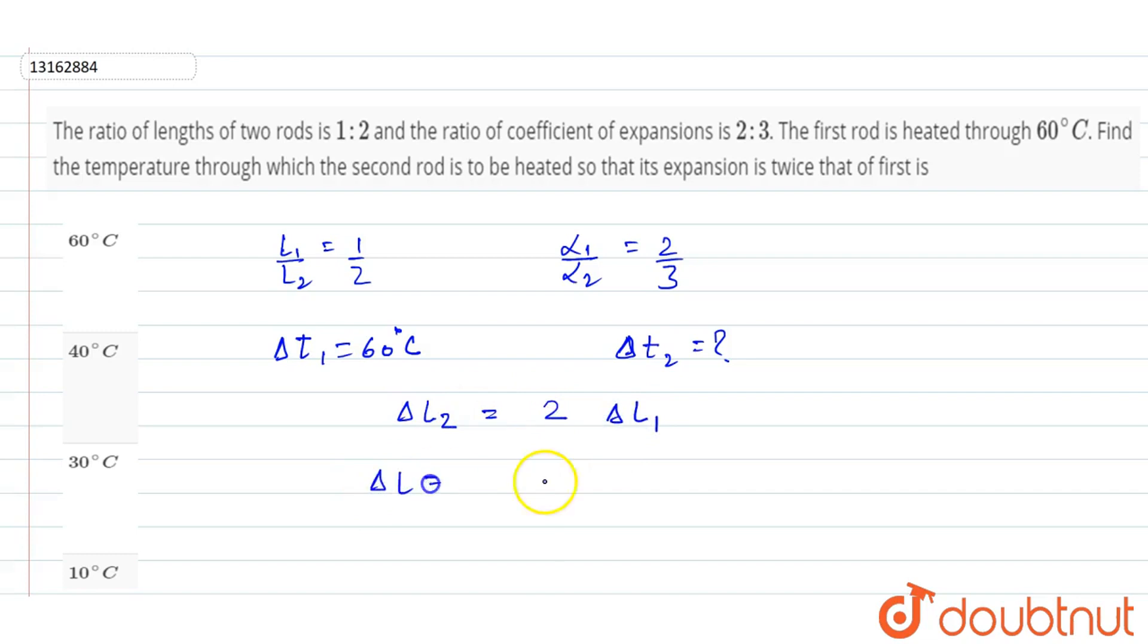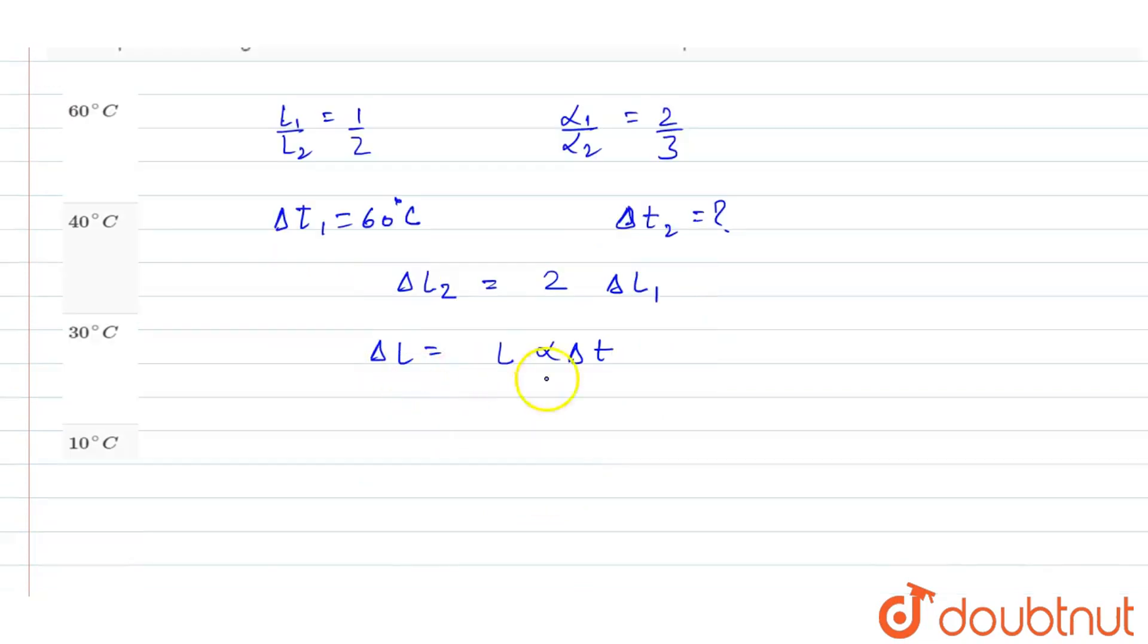Now expansion is equal to L alpha into delta T. This is the thermal expansion equation. And now we can put these in the above equation. So del L2 will be L2 into alpha 2 into del T2, which will be equal to 2 into alpha 1 L1 del T1.